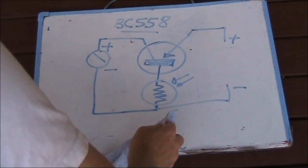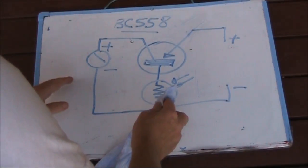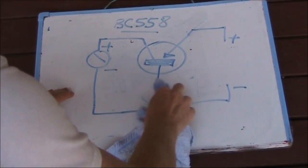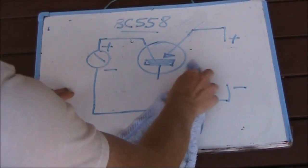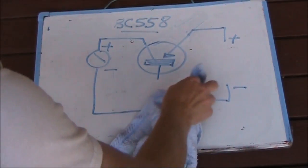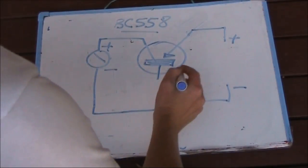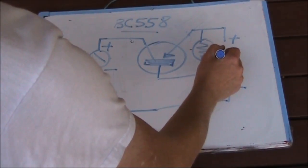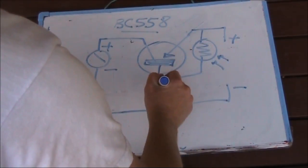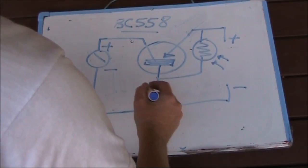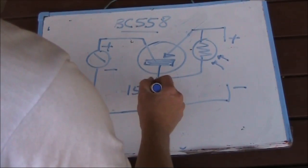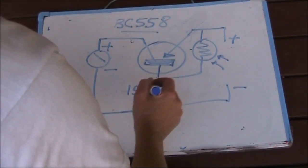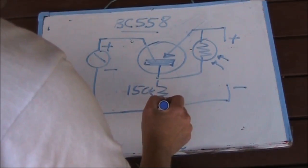Now, what about if you want to change it around so the buzzer sounds when it's dark, not when it's light? All we need to do is change the position of the LDR and add an extra component. The LDR, instead, is up here. And the extra component is a resistor. I'm using 150K, but depending on the LDR, it may well be less. The value won't be very critical.